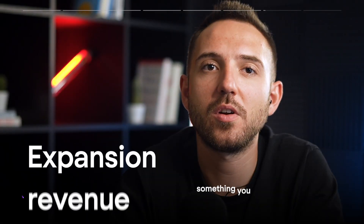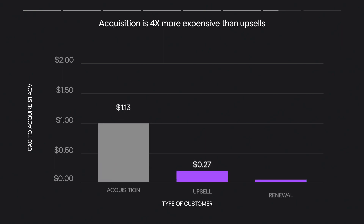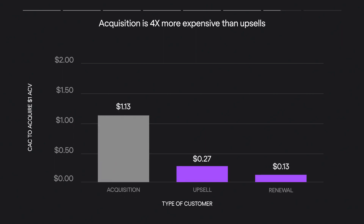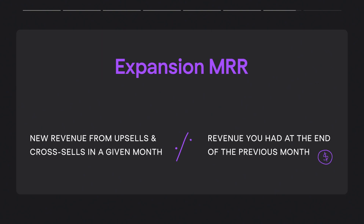The next metric is expansion revenue — what you earn when customers upgrade to a higher-tier plan. It's less costly to upgrade existing customers than to acquire new ones; in fact, it's about four times more expensive to gain new customers, considering that not all leads will reach the bottom of your sales funnel. Due to high expansion revenue, your churn rate may even go negative — net negative churn means you cover revenue loss from churned customers through upsells. To calculate expansion revenue, divide revenue from upsells by total revenue from the same period.